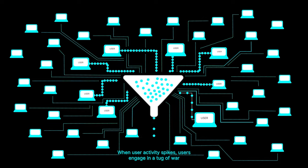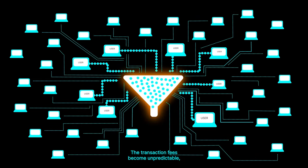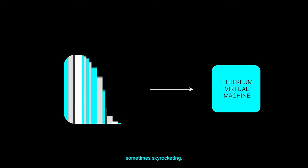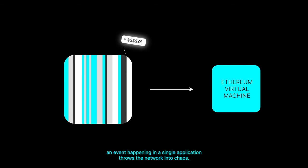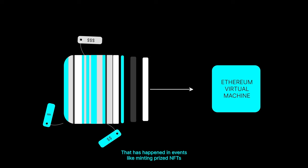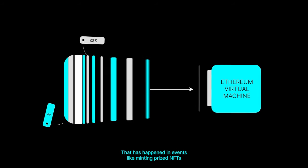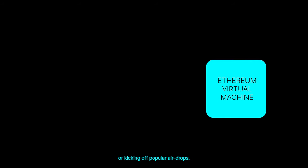Imagine every application and user on the network competing for the attention of Ethereum's sole CPU. When user activity spikes, users engage in a tug-of-war for block space. The transaction fees become unpredictable, sometimes skyrocketing. In extreme cases, an event happening in a single application throws the network into chaos — as happened with minting prized NFTs or kicking off popular airdrops.